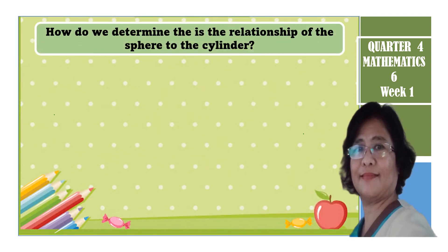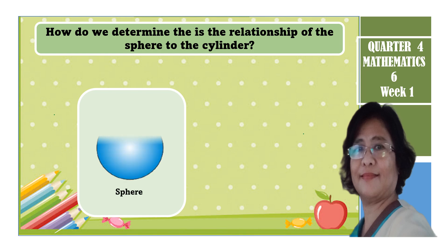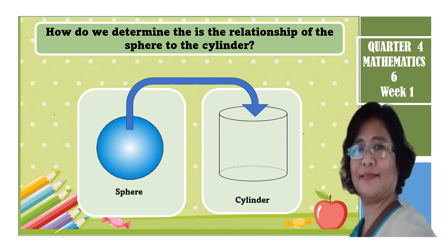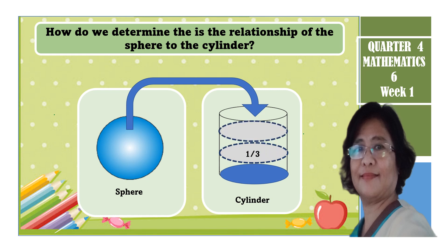Let us now determine the relationship of the cylinder to the sphere. If the diameter of the sphere and the cylinder are the same, how is the volume of the sphere related to the volume of the cylinder? If you fill the sphere with water and transfer the content to the cylinder, notice that the cylinder is two-thirds full. Therefore, the sphere is just two-thirds of the volume of the cylinder.